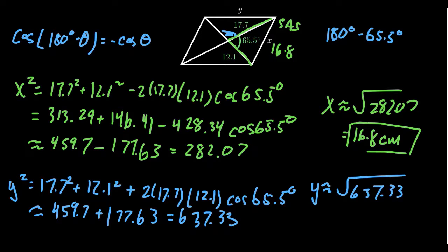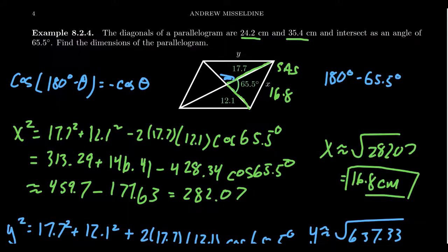So using the law of cosines, we can find the dimensions of a parallelogram if we know the lengths of the diagonals and we know the angle between the two.